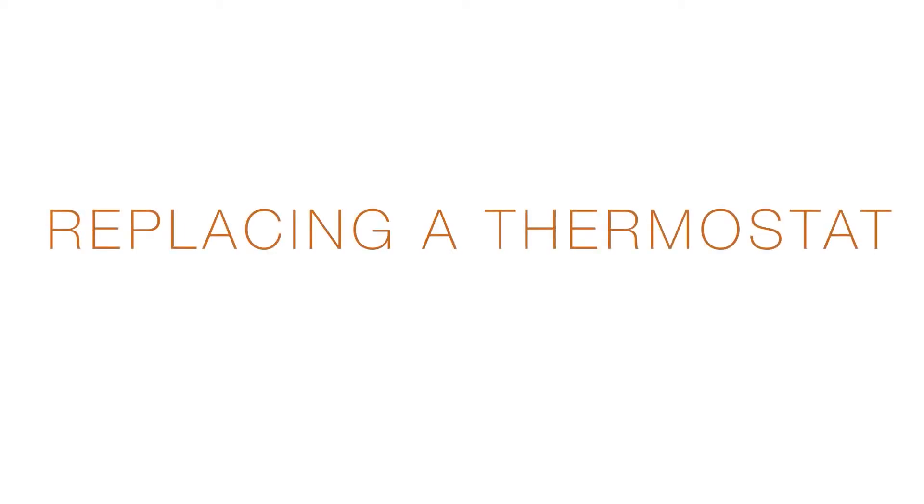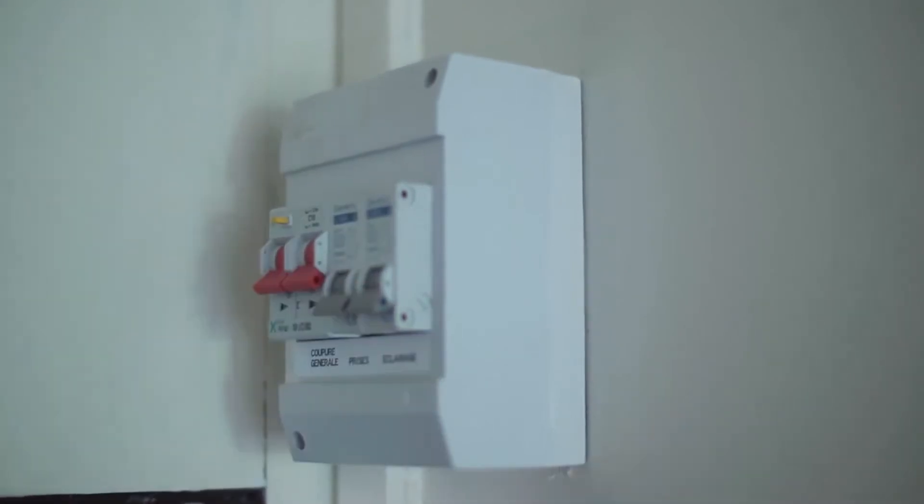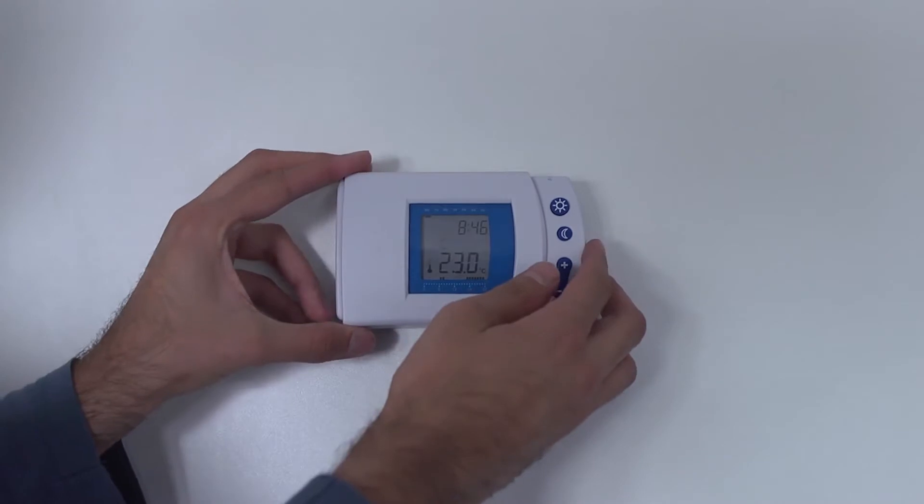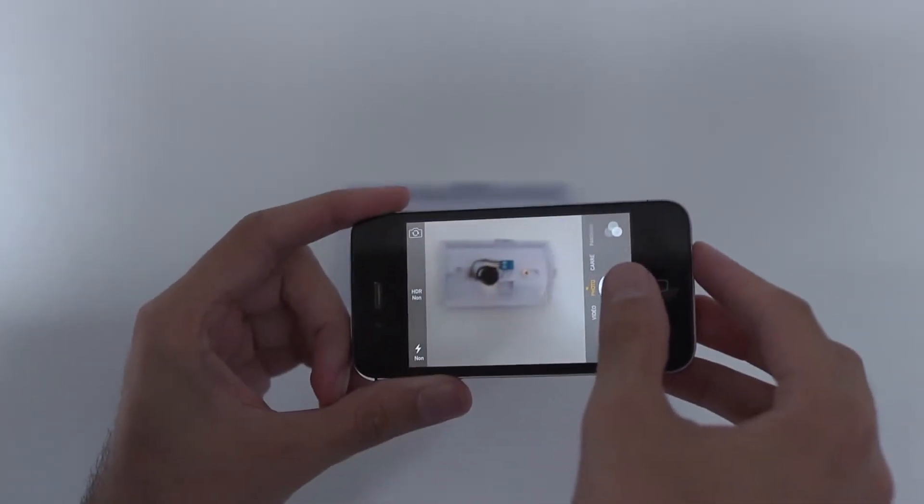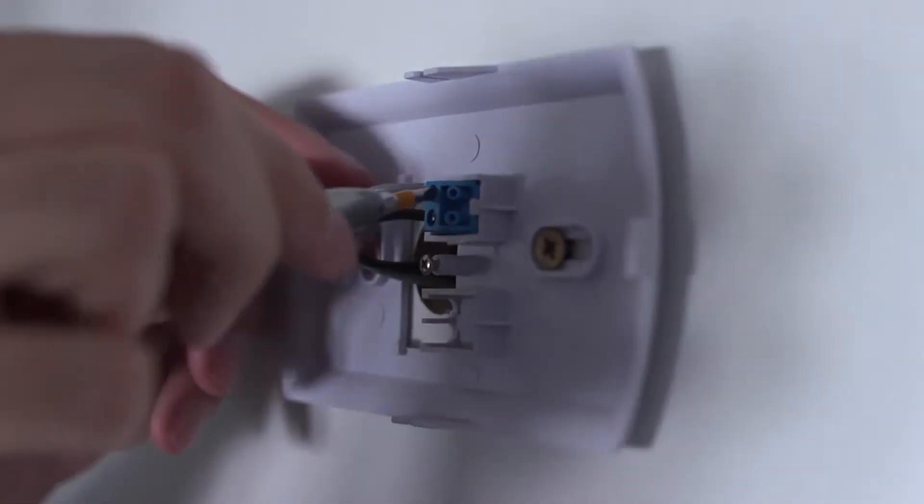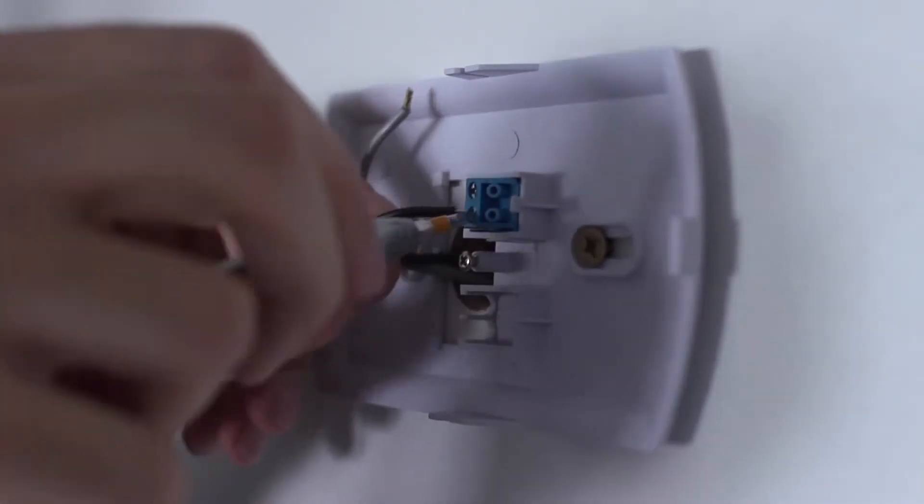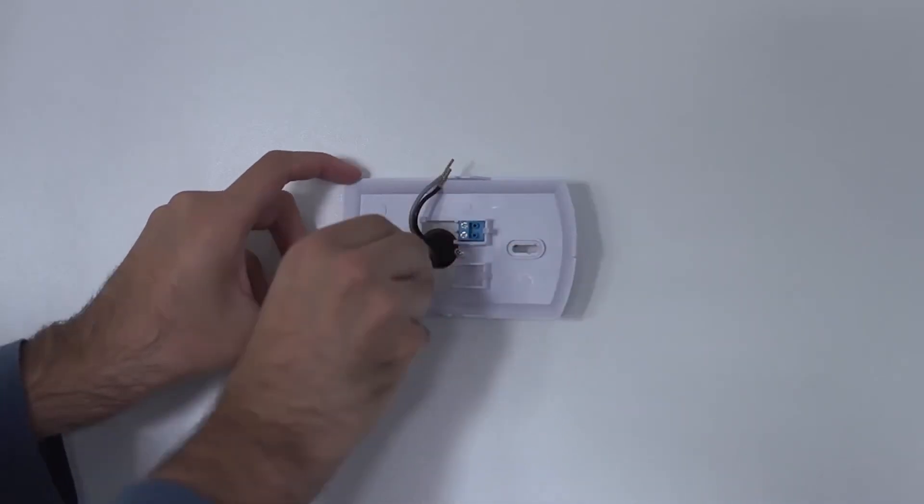Replace the thermostat. Before beginning installation, don't forget to turn off the power. Remove the cover of your old thermostat. Take a picture of the wires as they are. This will be a good reference to have if you have questions in the future. Unplug the control wires from the boiler with a screwdriver. Remove the old mounting plate from the wall.